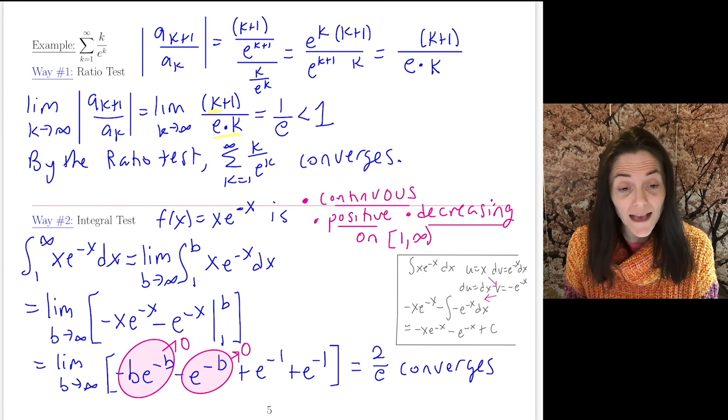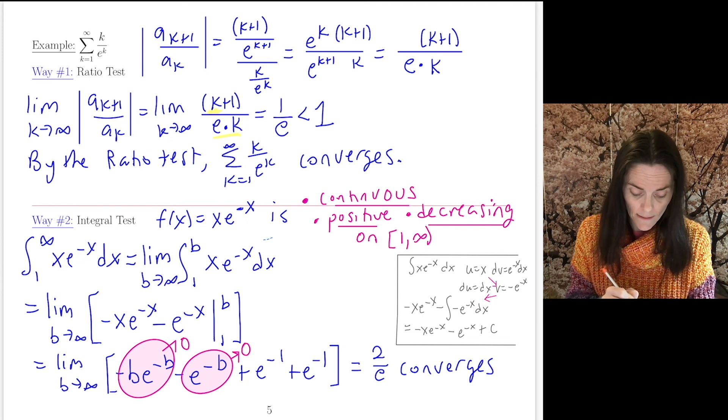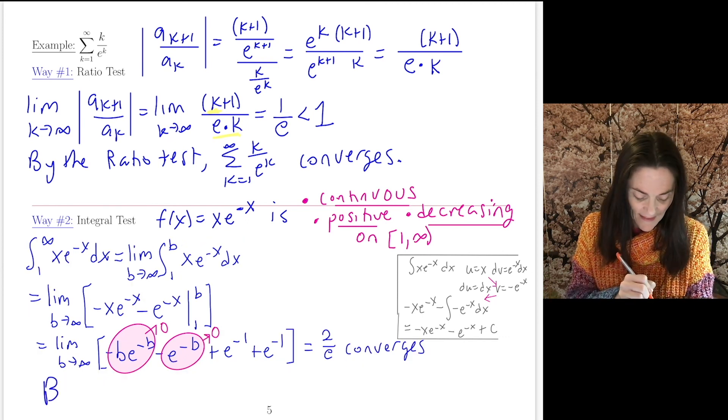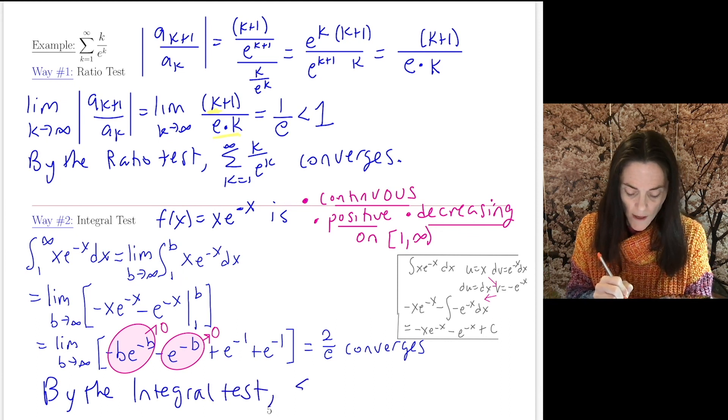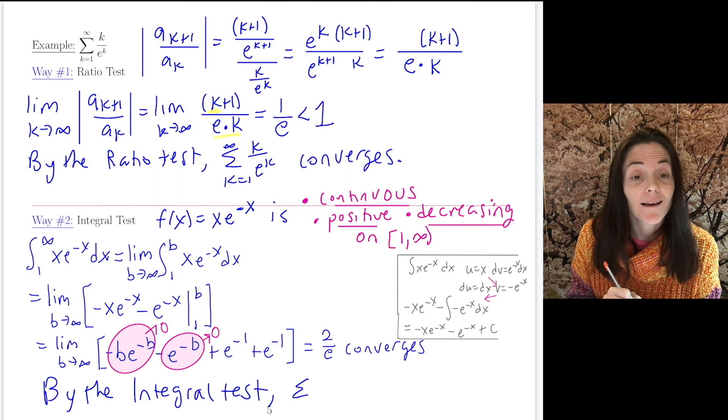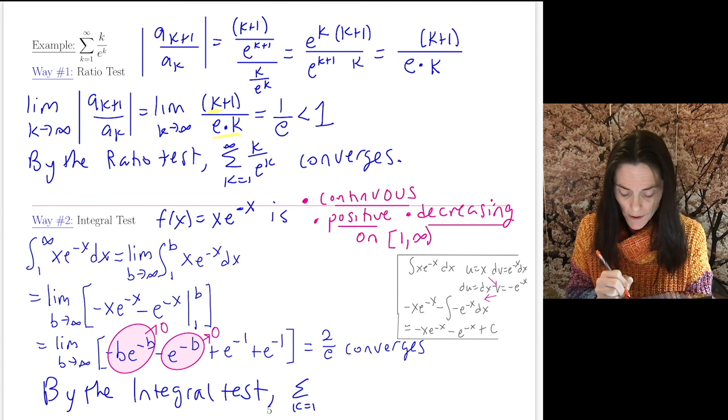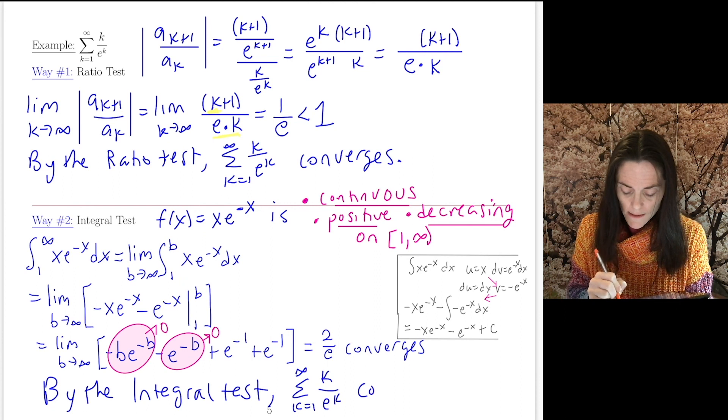But I need to go back to my series. I quote the test by the integral test, and then we are concluding the series, k equals 1 to infinity of k over e^k. This converges.